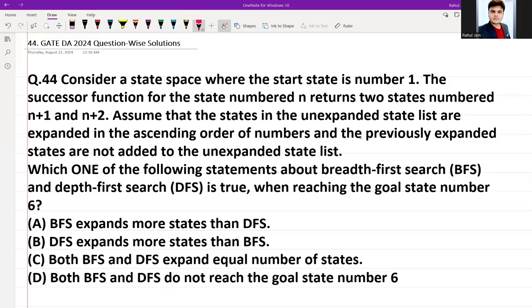Hello everyone, I hope you all are doing very well. This is question number 44 which was asked in GATE DA 2024, and the question was from data structures. Consider a state space where the start state is number 1. The successor function for the state numbered n returns two states numbered n+1 and n+2.